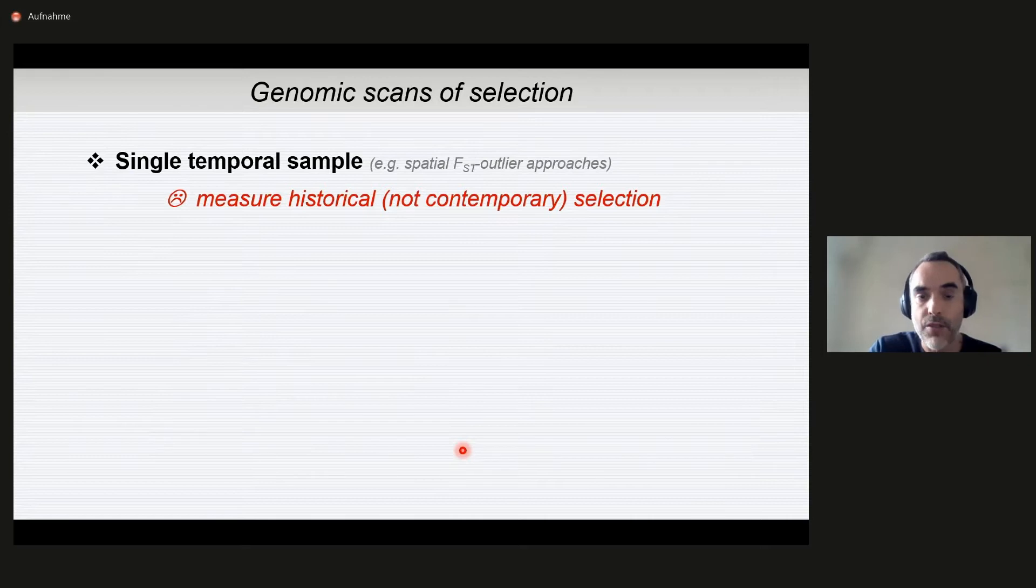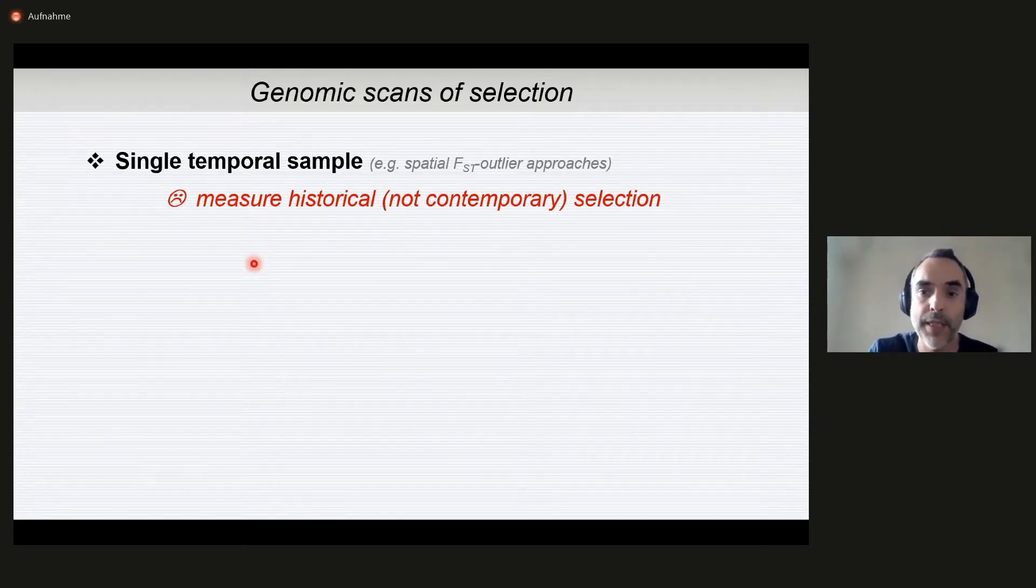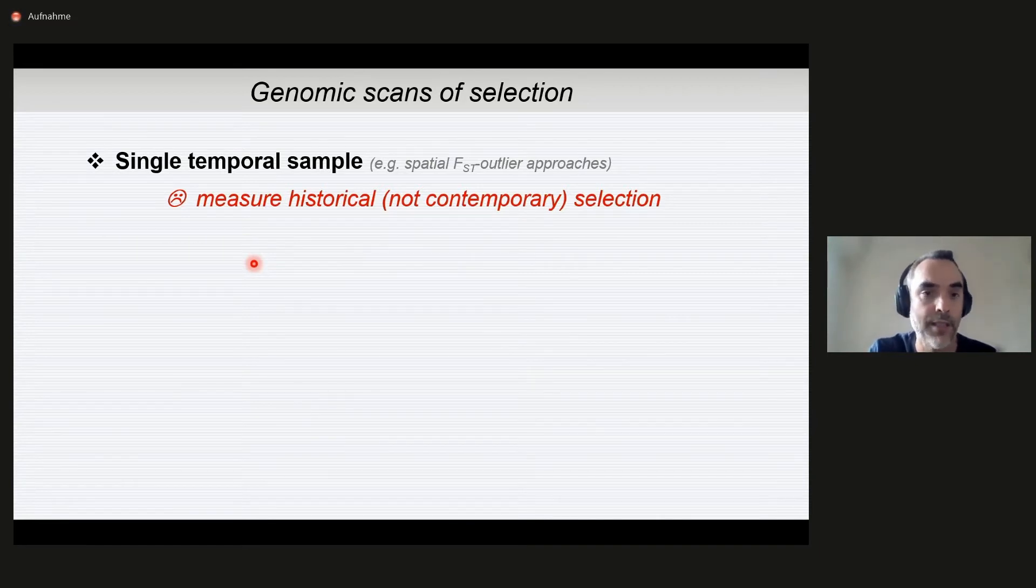Genomic scans of selection are widely used, as you all know. Many of them are based on a single temporal sample, and we compare the observed versus the expected pattern of genetic variation under some particular demographic and selective model. In this category, we have those based on the frequency spectrum or FST variables among populations or linkage disequilibrium and so on. But these methods measure historical selection, not contemporary selection.